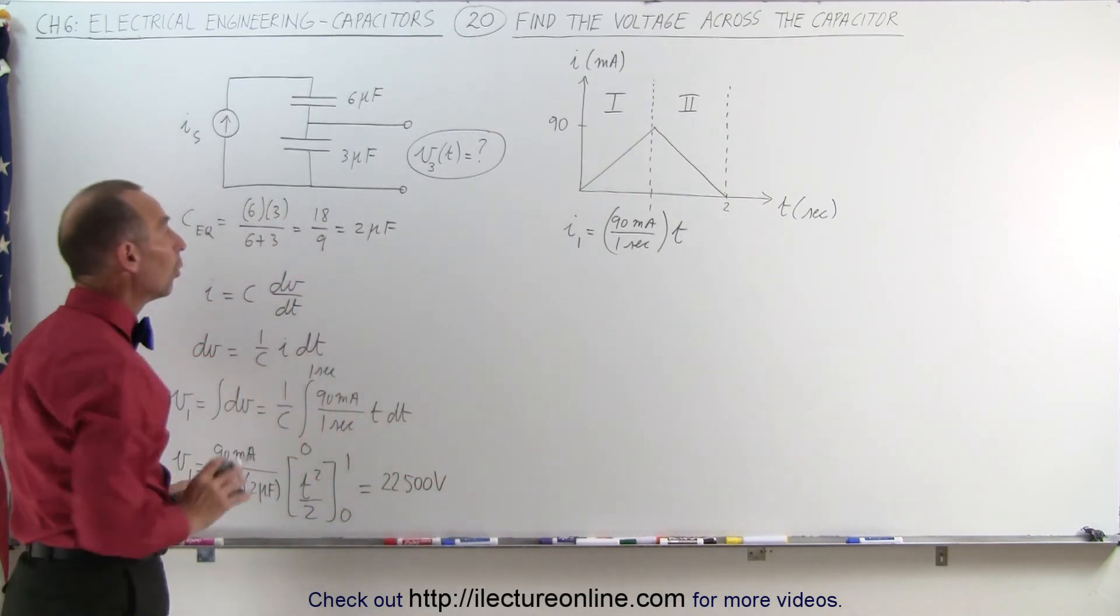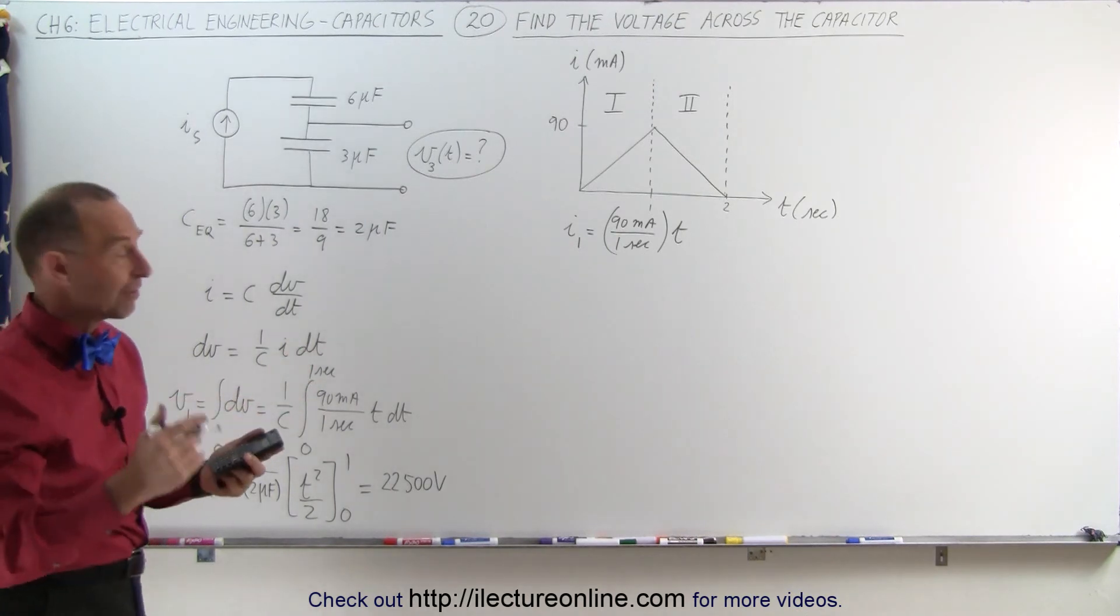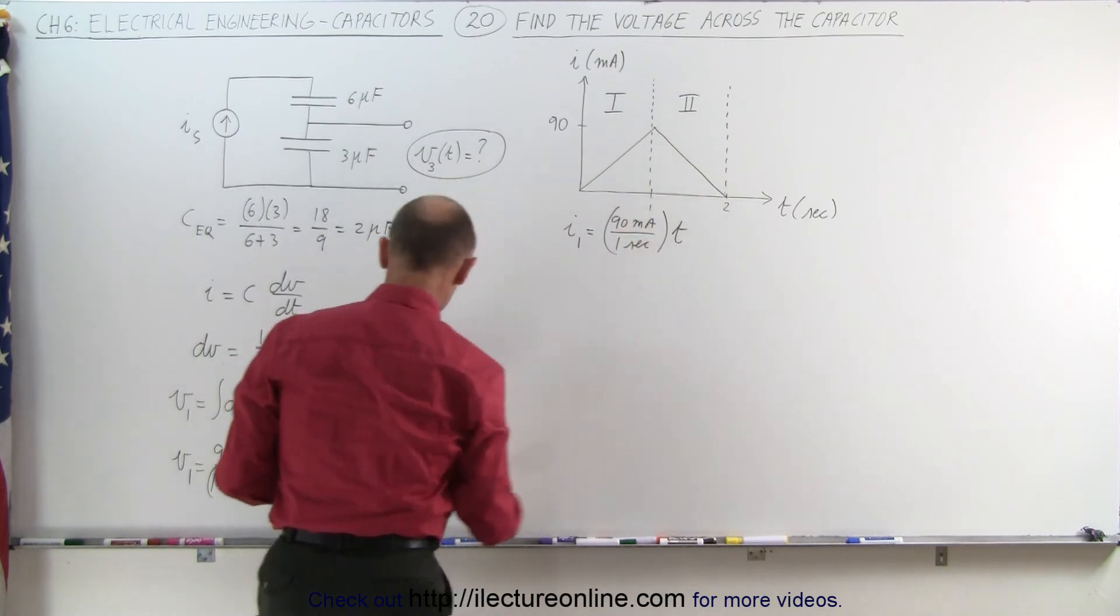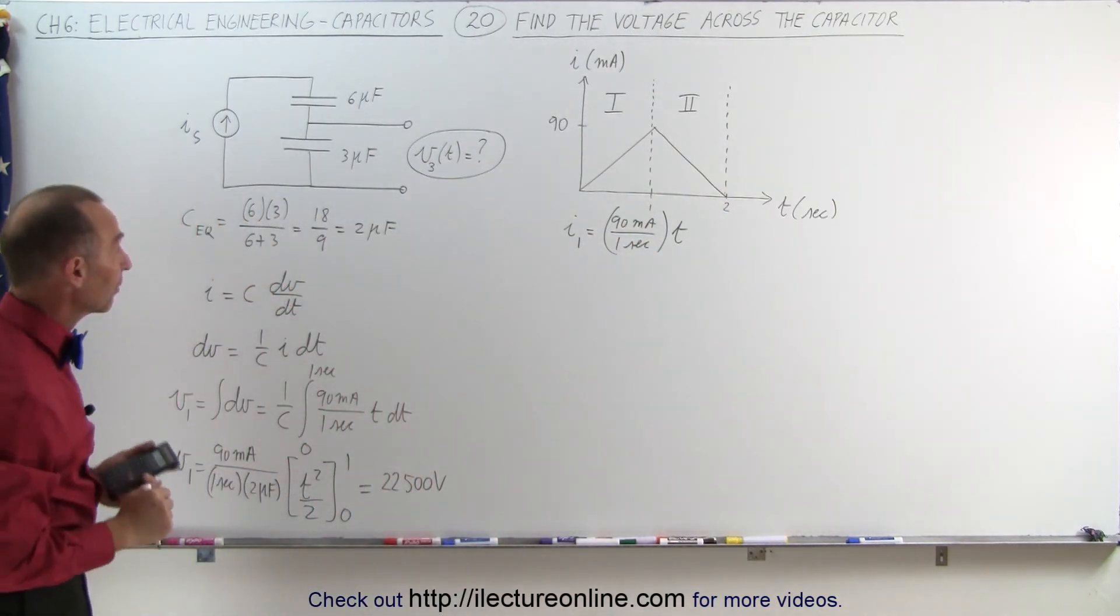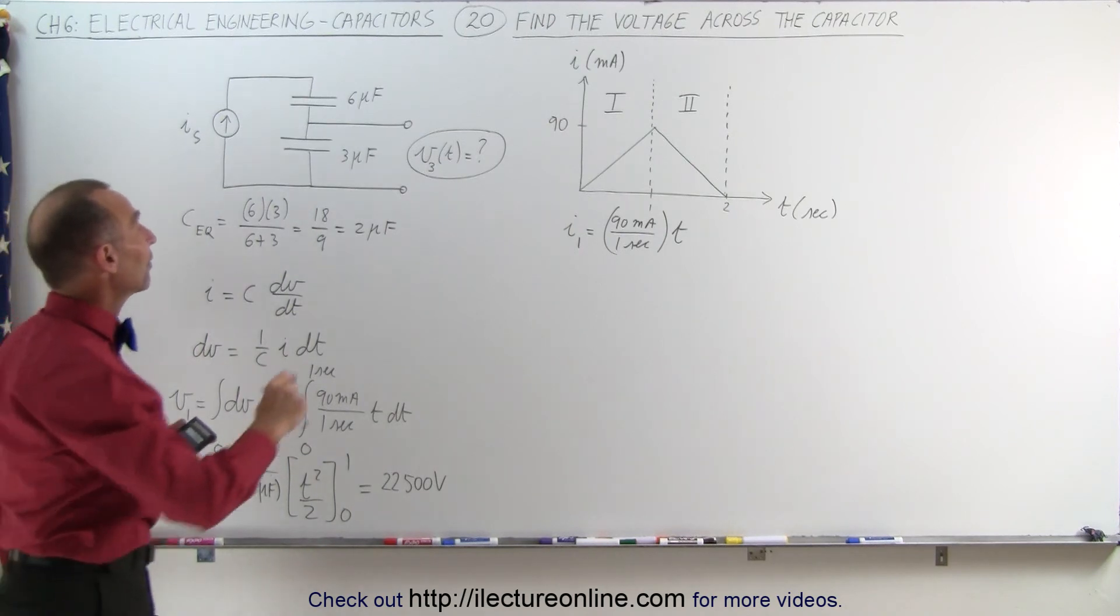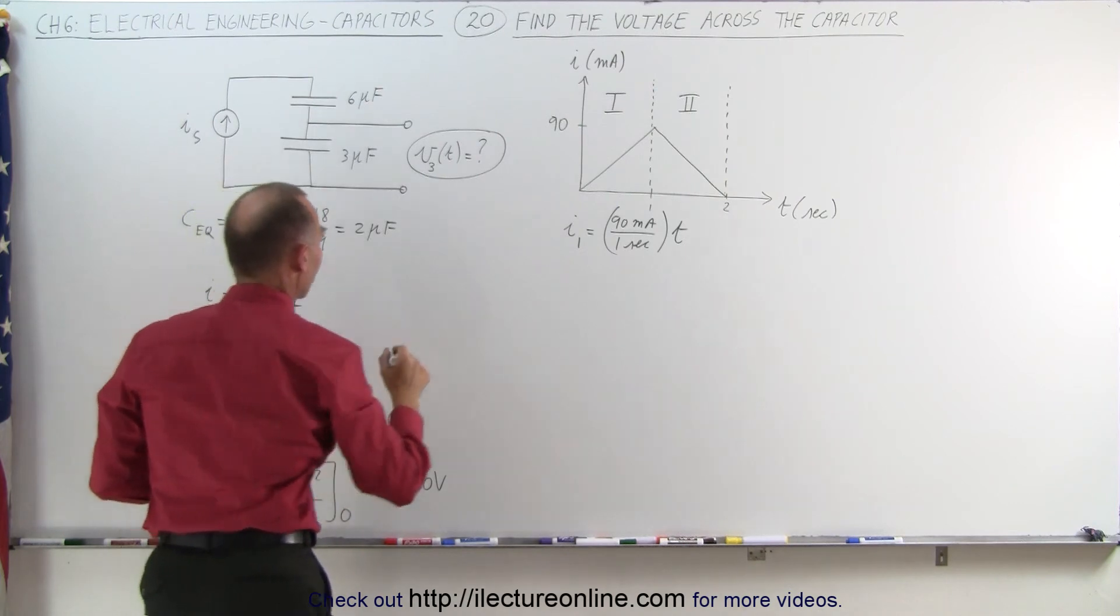That would be for region 1. So, for region 1, meaning for the time from 0 to 1 second, after 1 second, we've accumulated 22,500 volts across the capacitor, the equivalent capacitance, so how do we find out how much capacitance we have across the 3 microfarad capacitor?